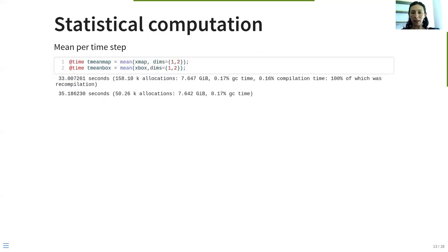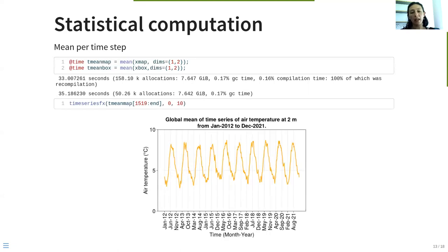Now we compute the mean but for time step, and also we found something similar. The computation time between both chunkings are quite similar, 33 and 35 seconds respectively. Here we observe a ten years time series of the global mean for the Earth.